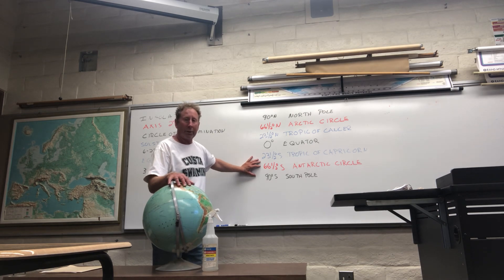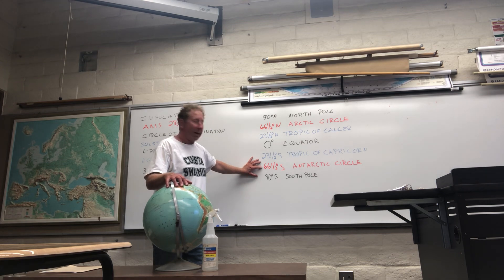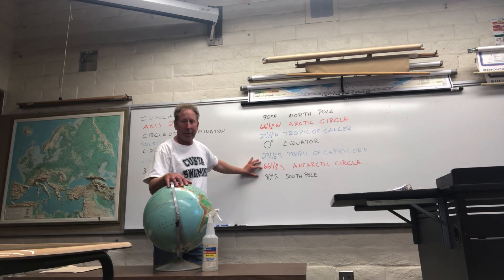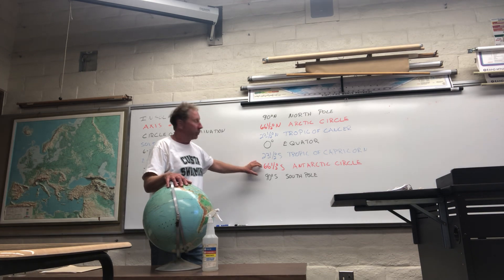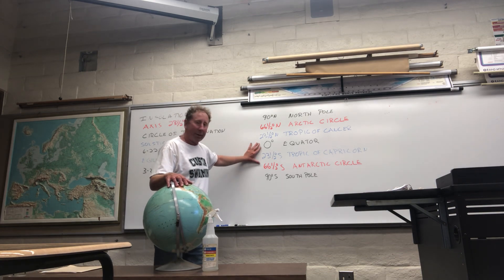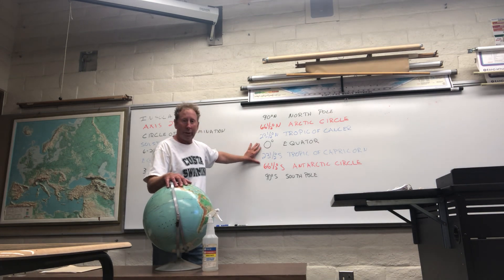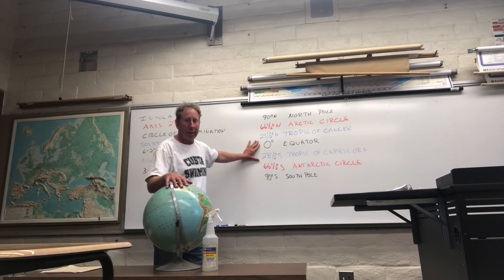You'd have to travel that far south to the Antarctic Circle to experience a day where the Sun would not rise or would not set. It would not set on December 22nd, and it would not rise on June 22nd — the opposite of the Arctic Circle. That's the significance of those lines. Include those dates on your exercise too if you can.